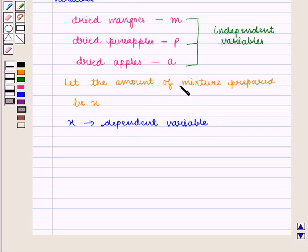And we know that this dried fruit mixture is prepared by adding dried mangoes, dried pineapples, and dried apples. So we have X, which denotes the amount of mixture, is equal to M, that is the amount of dried mangoes, plus P, the amount of dried pineapples, plus A, the amount of dried apples, which is the required linear equation.